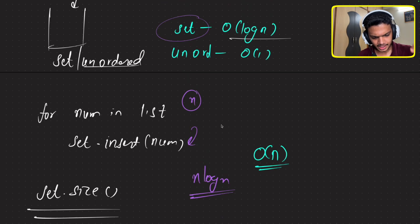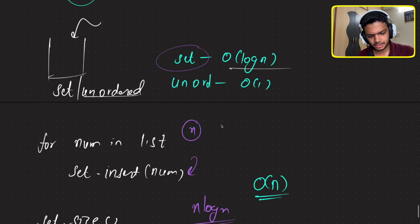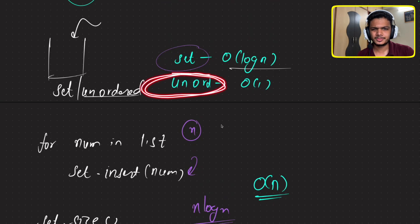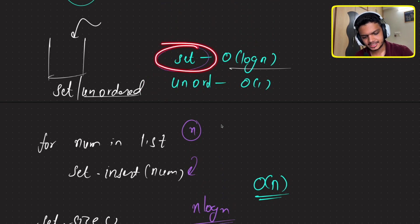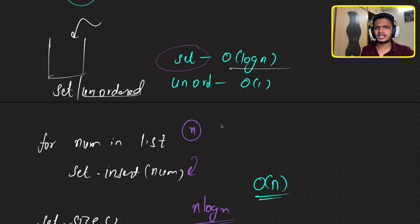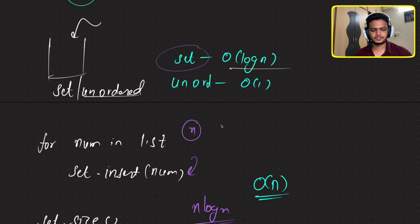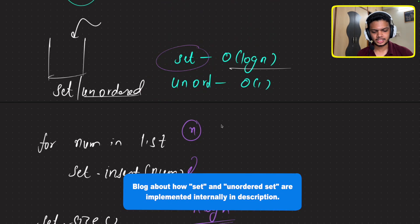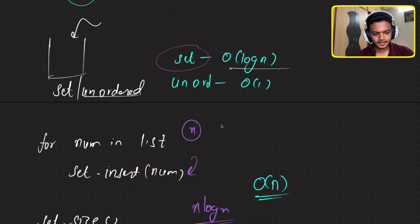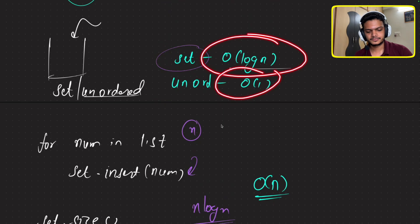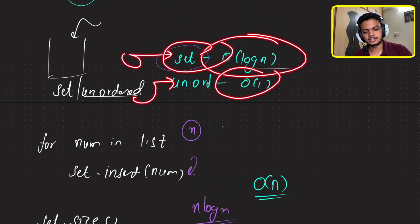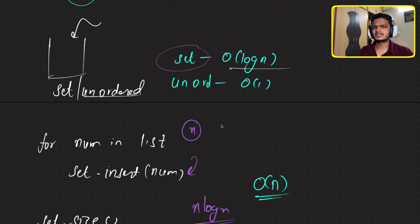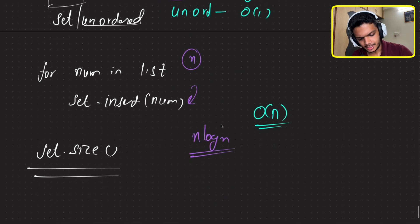The unordered set behind the scenes actually stores elements in an array using hashing. The regular set internally stores elements in a balanced binary search tree. If you're interested in the internals, I'll attach a blog in the description. The key reason set is O(log n) is that the balanced BST has height O(log n), so you never go more than log n levels deep on any operation.